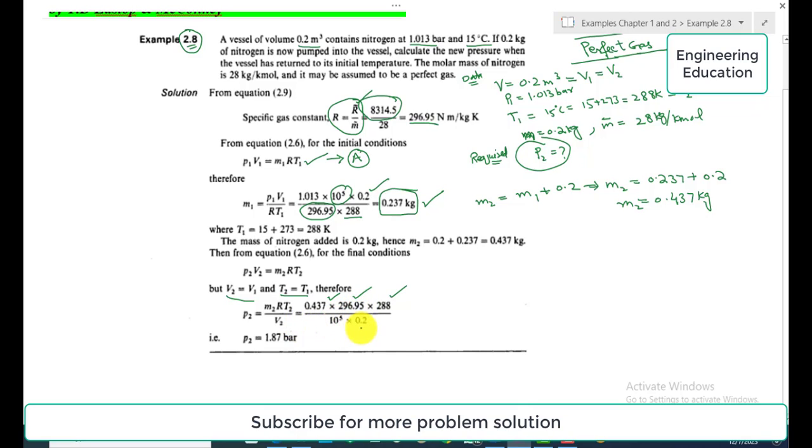V₂ is 0.2. Converting to bar, we divide by 10⁵. When we simplify this, the value of P₂ is 1.87 bar. So this is the required pressure after pumping 0.2 kg of nitrogen into the vessel.